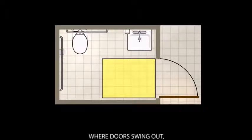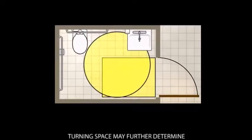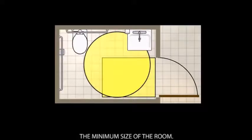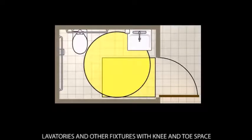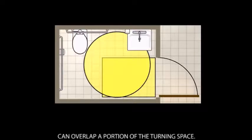Where doors swing out, turning space may further determine the minimum size of the room. Lavatories and other fixtures with knee and toe space can overlap a portion of the turning space.